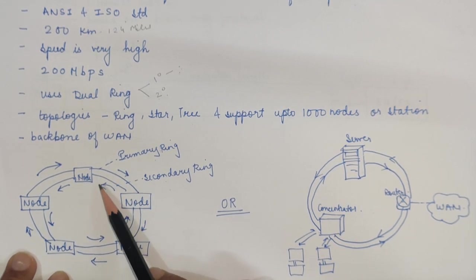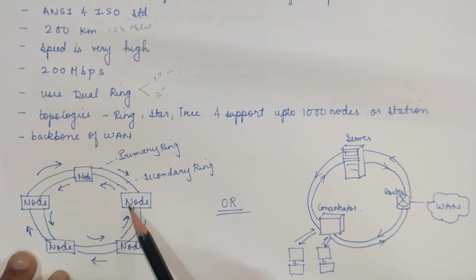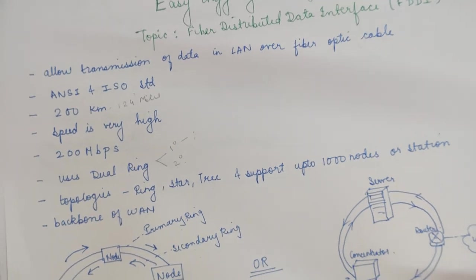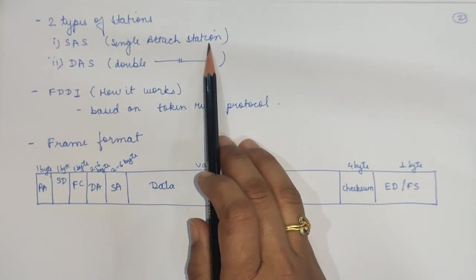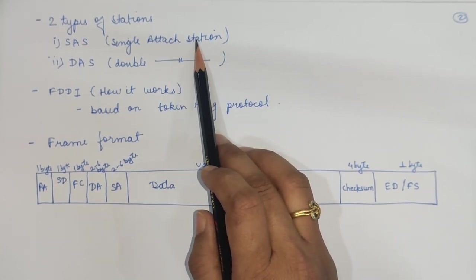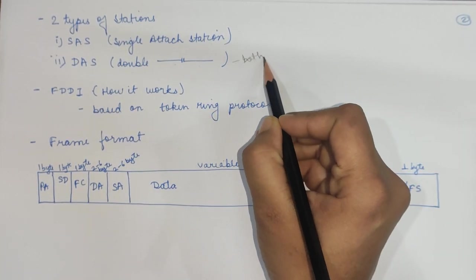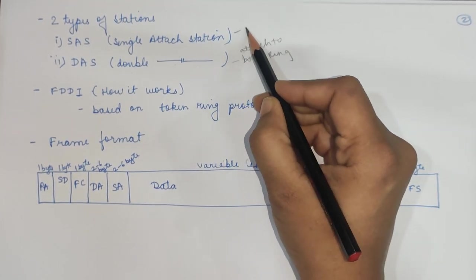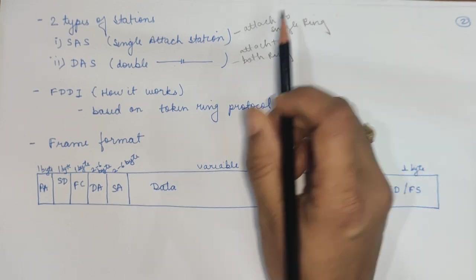There is no restriction on which direction the rings rotate, but they must rotate in opposite directions — if the primary ring rotates in one direction, the secondary ring must rotate in the opposite direction. There are two kinds of stations: SAS (Single Attached Station), which is attached to a single ring, and DAS (Double Attached Station), which is attached to both rings.